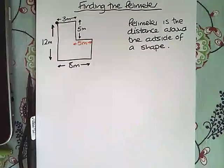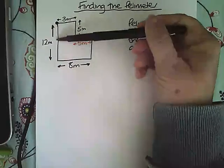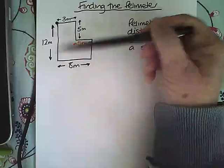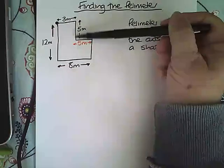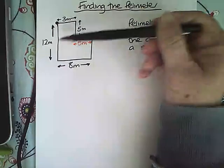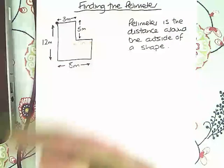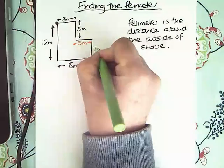And if we look at the vertical distance here, we've got a vertical distance of 12, this vertical side is 5 metres, so that means the rest of it is 12 take away 5, which is 7 metres. So this distance here is 7 metres.